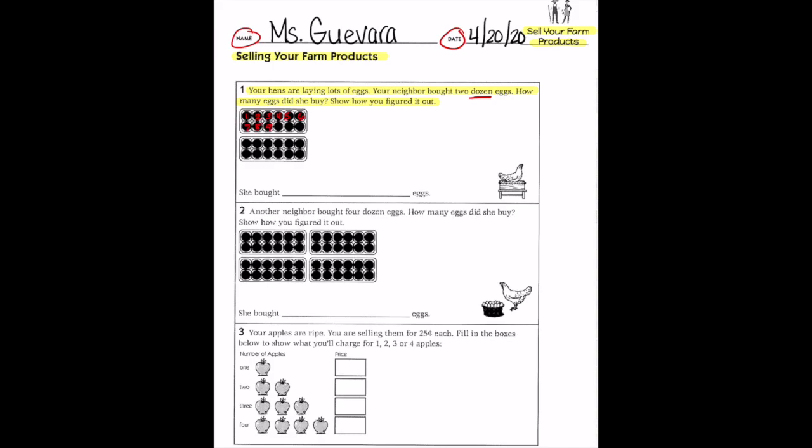The first thing that I need to do is figure out how many are in a dozen. So I'm going to count all the eggs on top first. I counted 12. Then I'm going to count the ones on the bottom. I counted 12 more. So two dozen eggs means 12 two times. Now I need to add 12 plus 12 to find out how many eggs my neighbor bought.